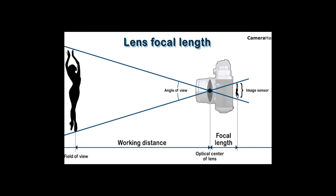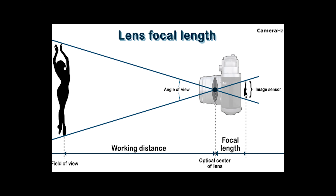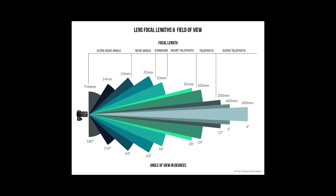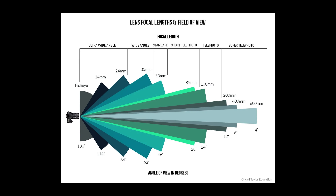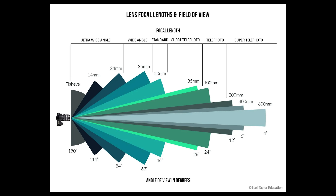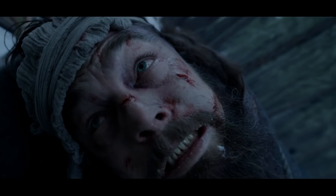Every single lens has a different focal length, and focal length is the distance between the center of the lens and the image sensor. The longer the focal length, the more narrow your angle is. And the shorter the focal length, the wider your angle is. We're going to get to how that actually affects your image in just a second.